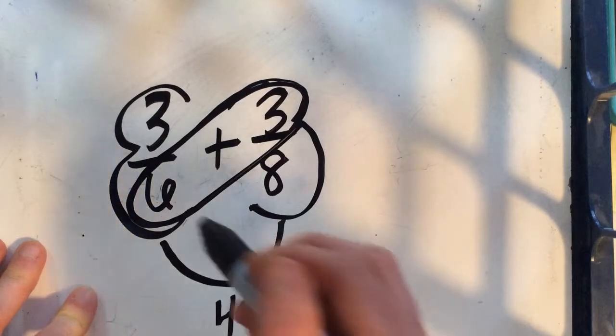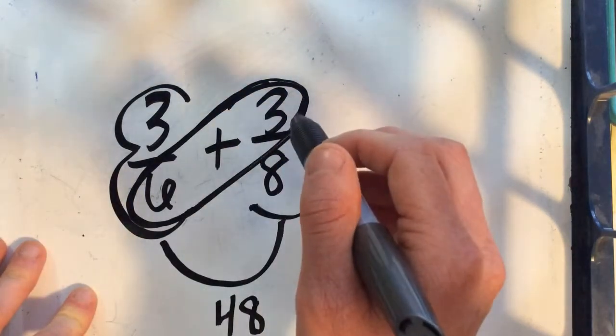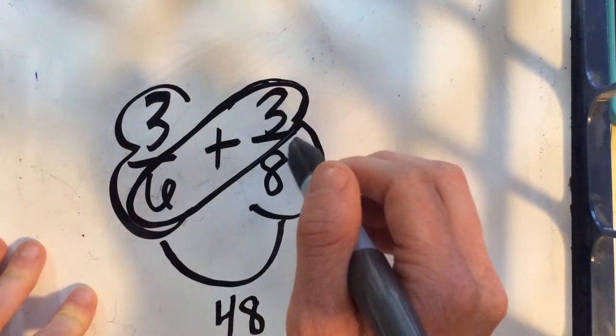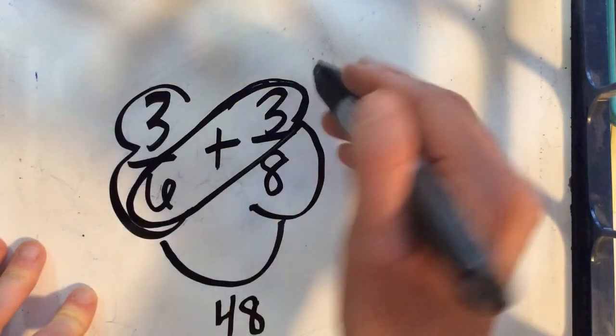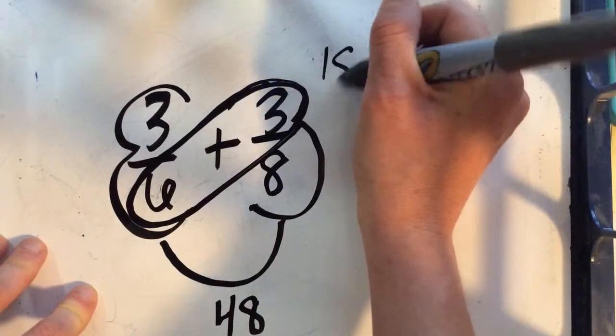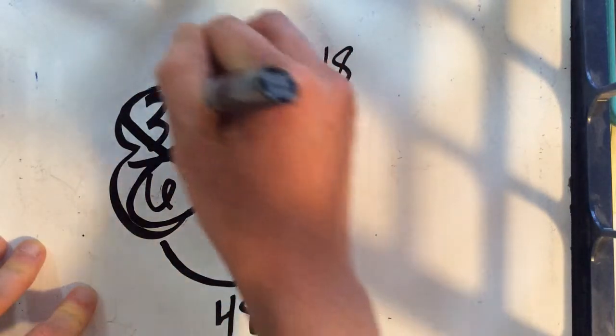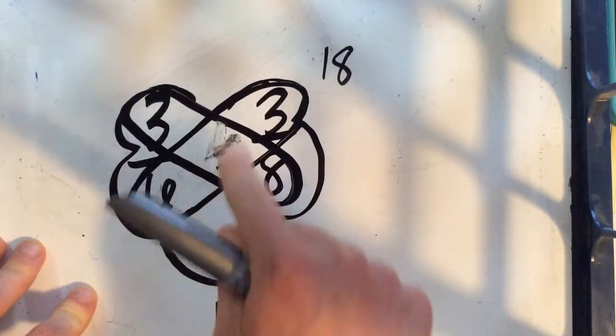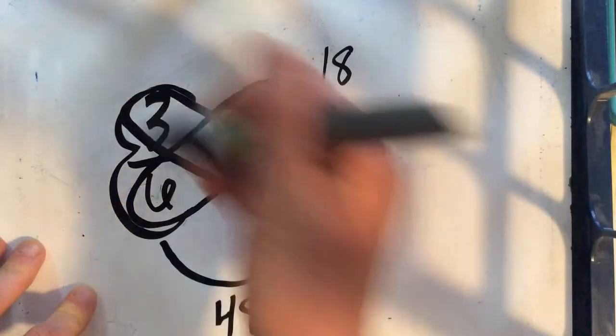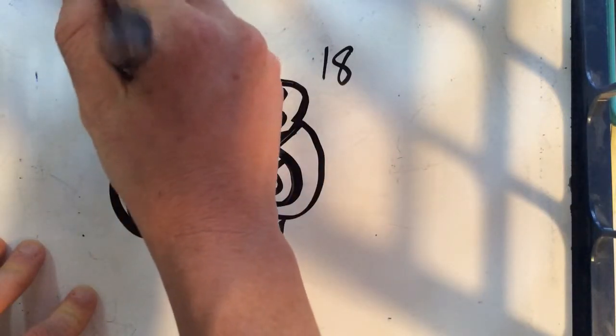Okay, and then I'm going to multiply across the wings here to get my numerators to form equivalent fractions. So six times three is 18, and three times eight is 24.